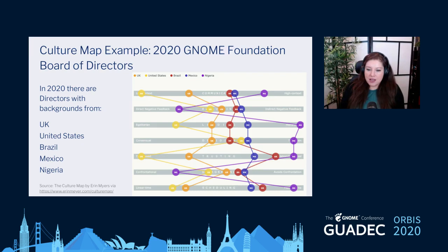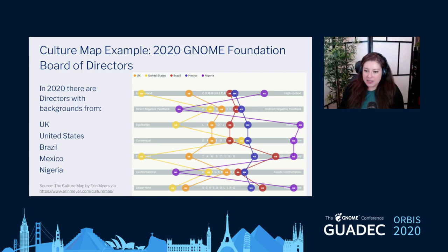I thought it would be fun to map out some of the cultural backgrounds we see in the GNOME Foundation Board of Directors, focusing on one indicator. You can find the mapping tool on Erin Meyer's website, though it is behind a paywall. Looking at the disagreeing indicator, all of the cultures represented are pretty much in the middle, but you can see inclinations — for example, Nigeria is a culture that values confrontation more so than the Mexican culture.